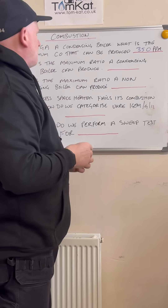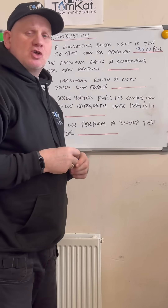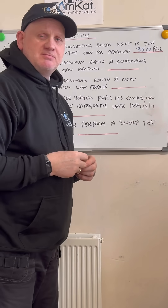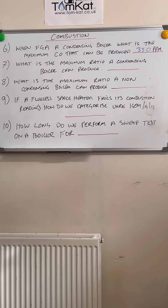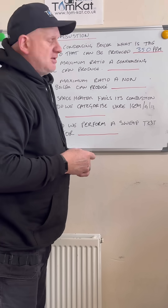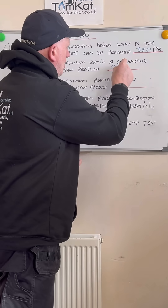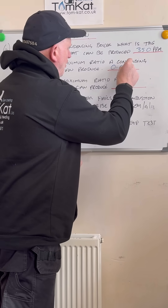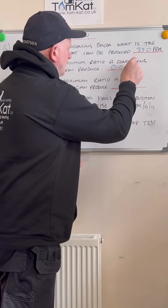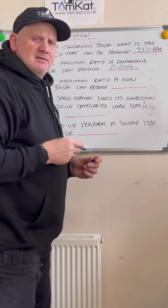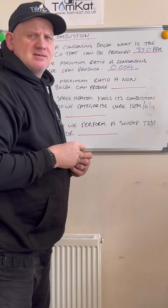Let's have a look at question seven. What is the maximum CO/air ratio a condensing boiler can produce? Did you say 0.004? Well, if you did, you'd be correct.